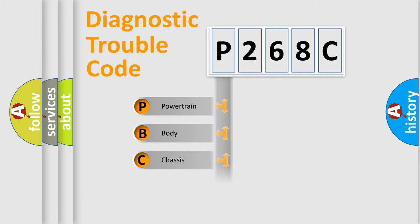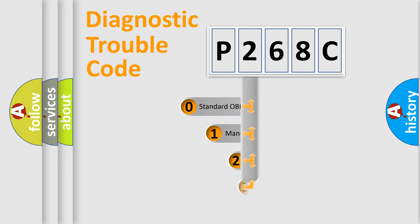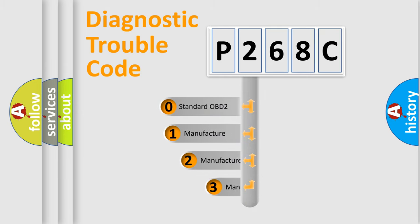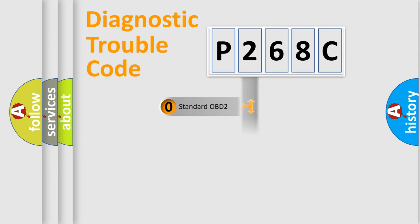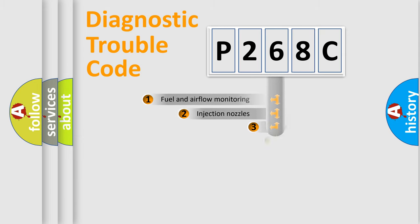We divide the electric system of an automobile into four basic units: Powertrain, Body, Chassis, and Network. This distribution is defined in the first character of the code. If the second character is expressed as zero, it is a standardized error. In the case of numbers 1, 2, or 3, it is a manufacturer-specific error.